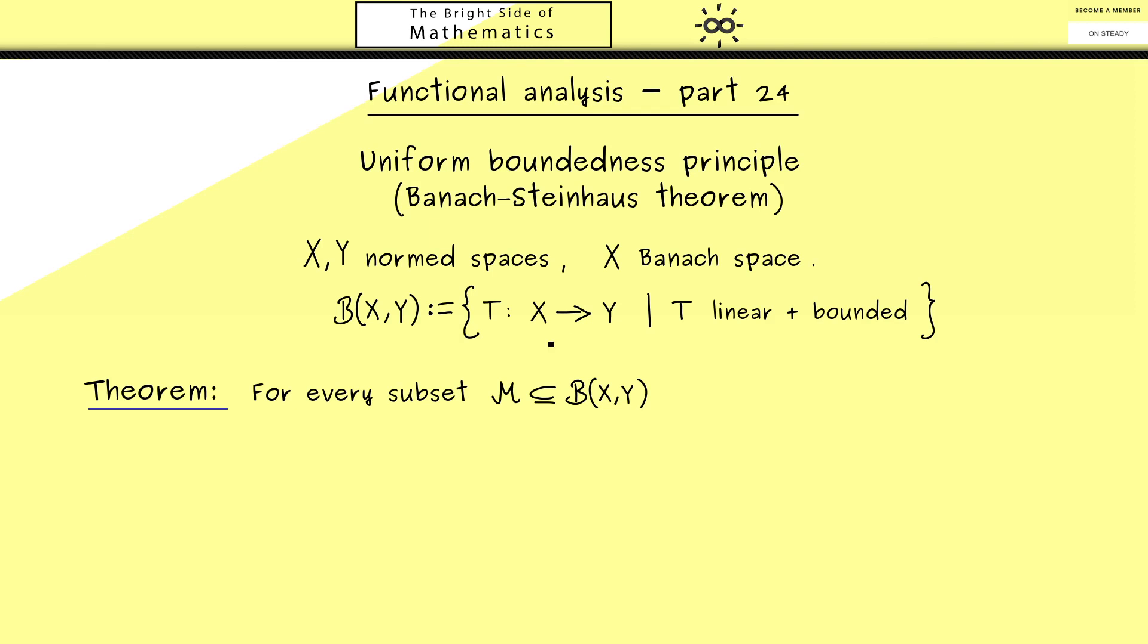Now for M we have the equivalence that it is bounded pointwise on X if and only if M is uniformly bounded. If this does not make any sense to you, that's totally fine because we first have to explain all the words here.